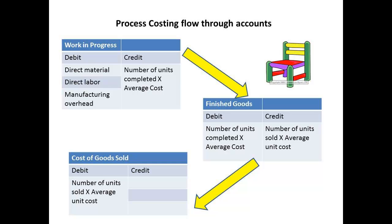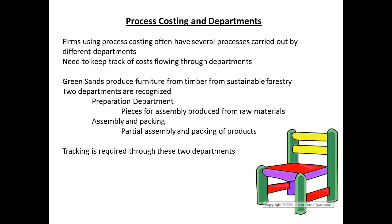How will process costing differ? You can see that we are still using the same accounts here. Debits to work-in-progress still consist of raw materials, direct labour and manufacturing overhead. When transferring the costs out, the amount is based on the number of units completed multiplied by the average cost per unit. This is the figure that will be transferred in, or debited, to the finished goods account. Since the processes to complete a good can vary from one to many, with process costing the business breaks down production into departments and keeps track of the costs flowing through these departments.